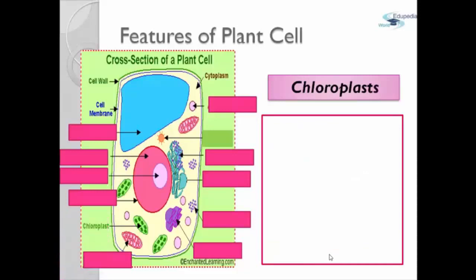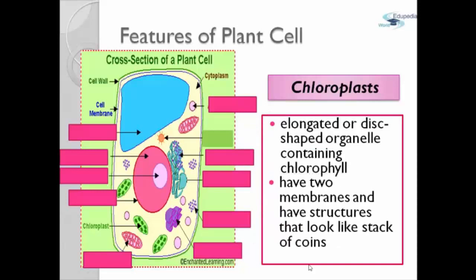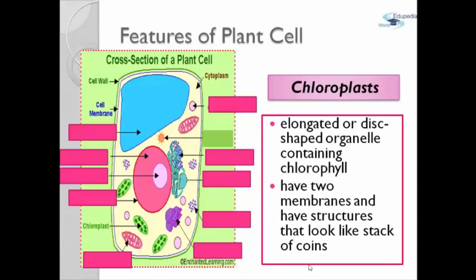Next is chloroplast. Chloroplast is a long disc-shaped organ containing chlorophyll and have two membranes and have structures that look like stacks.